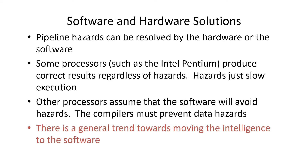Pipeline hazards can be resolved by hardware or software. Your Intel processors resolve them by hardware. Any program you give it, even if it has hazards, will be executed correctly. It's just that if there are hazards, it will slow the pipeline process, making the machine run slower. There are other processors that assume the software will take care of hazards, so the compiler has to rearrange the code to avoid them.